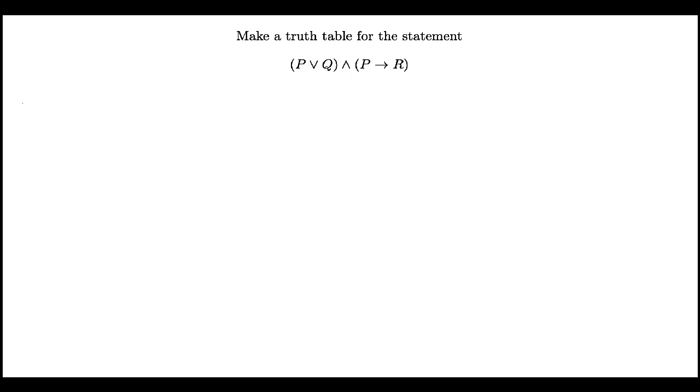Alright, let's take a look and see how to make a truth table. In this case, I want to make a truth table for the statement P or Q and P implies R.